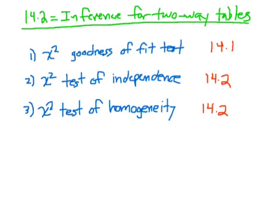Welcome back, everybody. This is the video for section 14.2, which is all about chi-squared — specifically, our book calls it inference for two-way tables. In section 14.1, we learned about the first flavor of chi-squared, which is the chi-squared goodness of fit test.